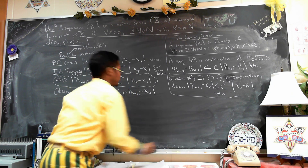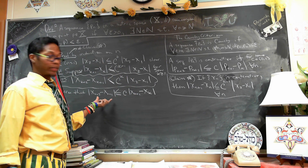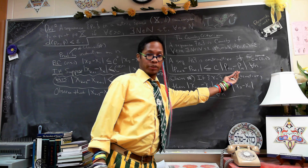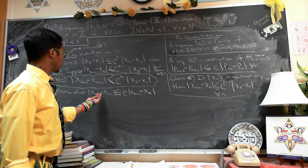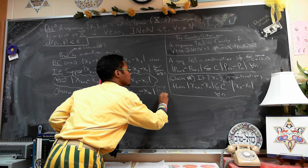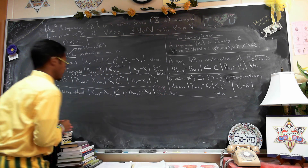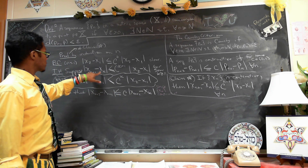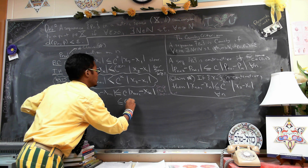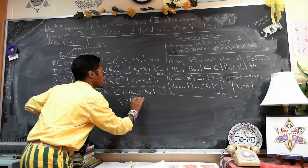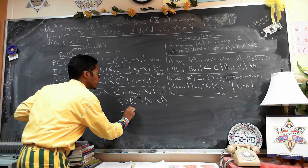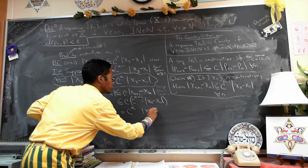This holds by the definition of a contractive sequence — we have that neighboring terms satisfy the bound in terms of c times the preceding two neighboring terms. Since x_n is contractive, we can apply the induction hypothesis to replace x_{k+1} minus x_k with c^{k-1} times x_2 minus x_1, giving us c times c^{k-1} times x_2 minus x_1, which equals c^k times x_2 minus x_1.